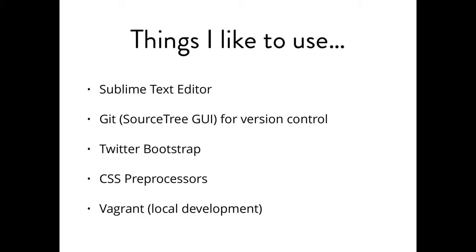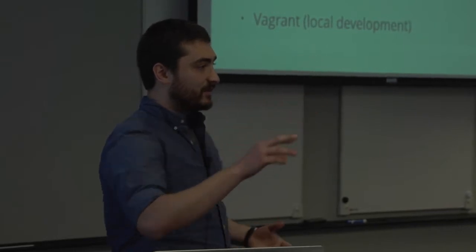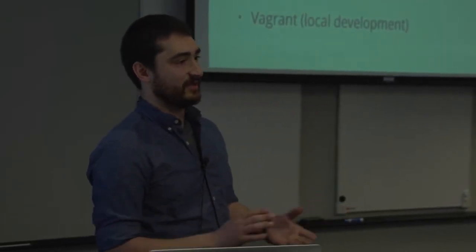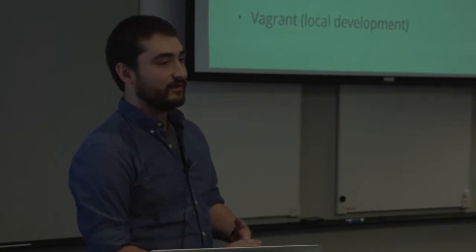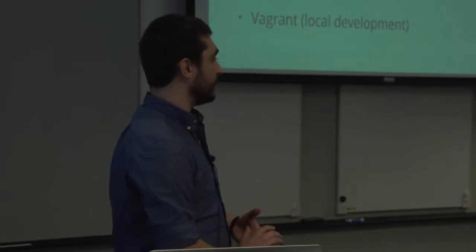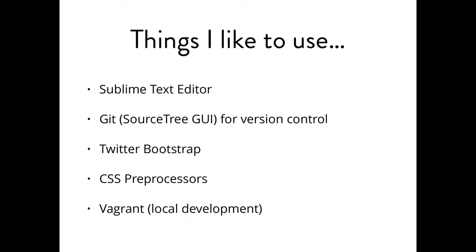Git for version control is really easy and I recommend trying it out using Sourcetree. You can take a folder from your desktop, dump it into the icon on Sourcetree, and you'll have a Git repository initiated for you that quickly. Even just using that to keep control of your code — maybe if you're coding a custom theme — is really helpful.